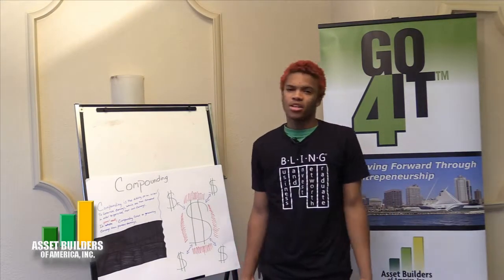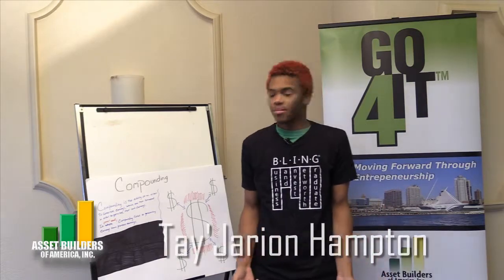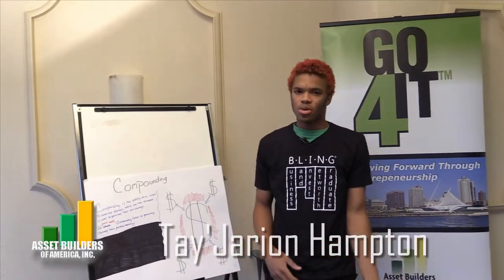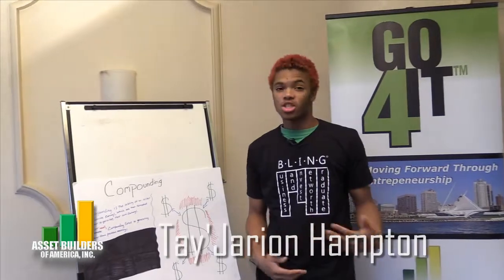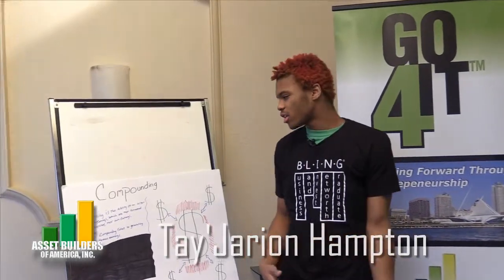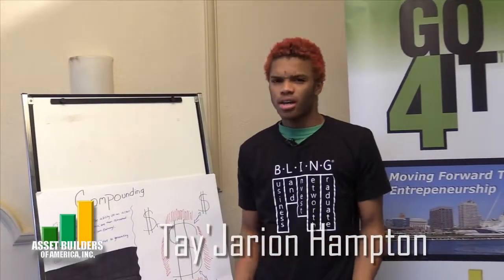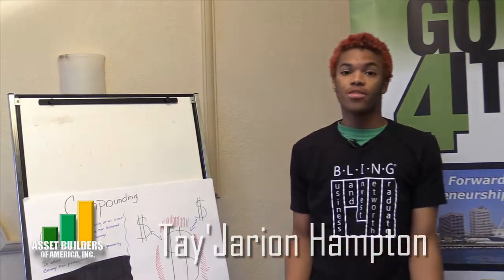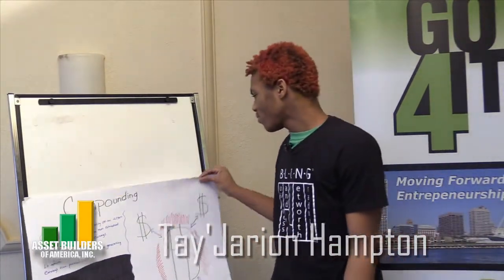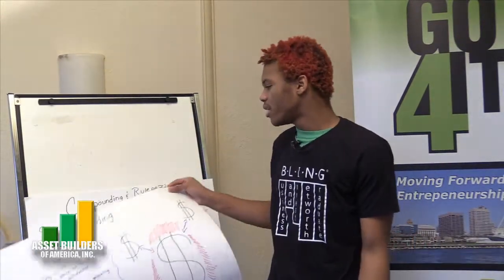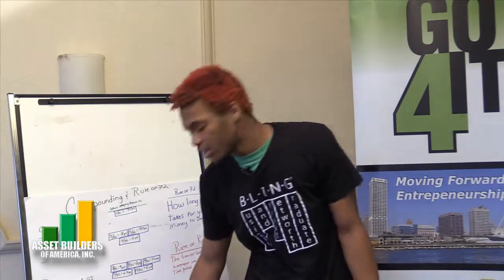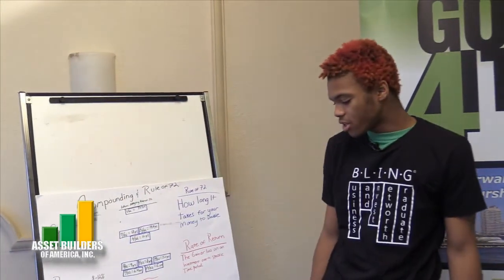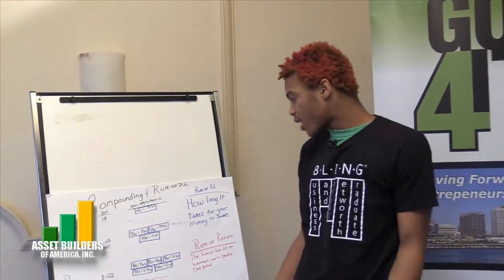What is compounding, you ask? Well, compounding is the ability of an asset to generate earnings which are then reinvested in order to generate their own earnings. In other words, compounding refers to generating earnings from previous earnings. Now I'm going to explain compounding and how you use the rule of 72 and rate of return inside of compounding.